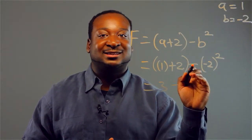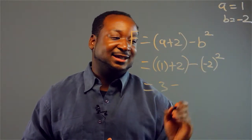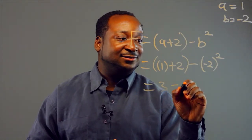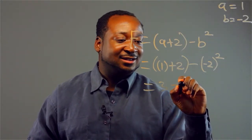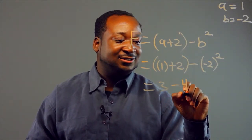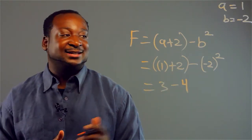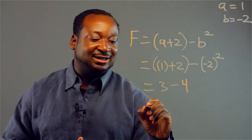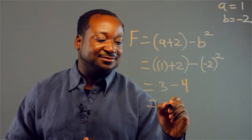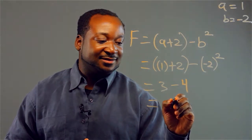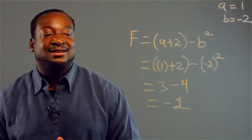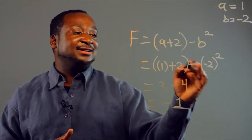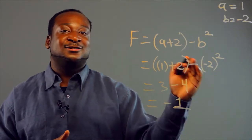This is where using the parentheses comes in handy. So it's 3 minus 2 squared, which is 4, and the minus sign stays in there. So our answer is negative 1. It's always helpful to use parentheses.